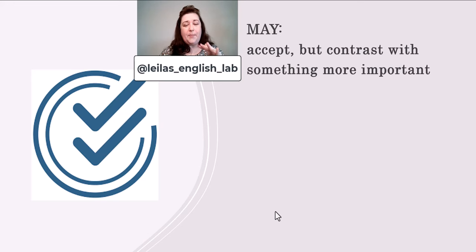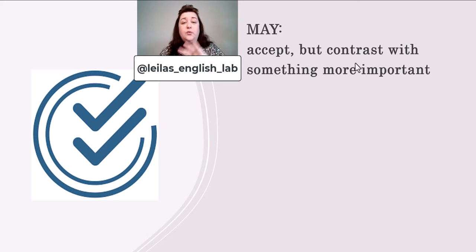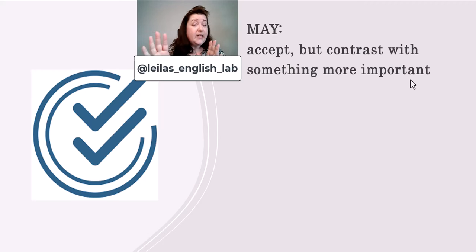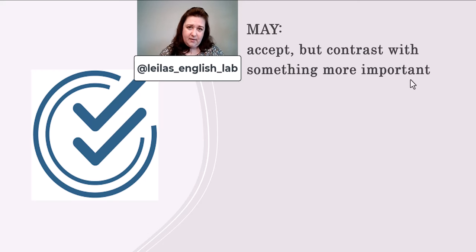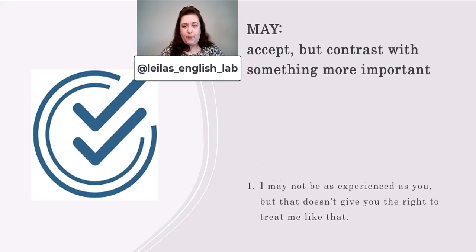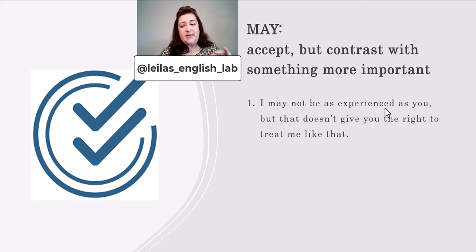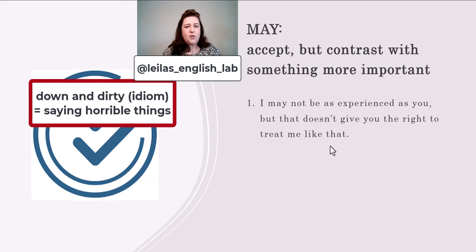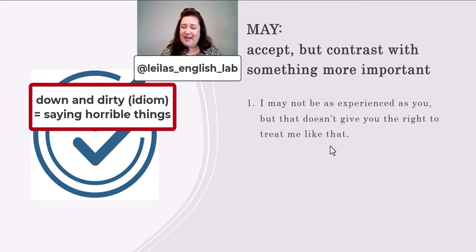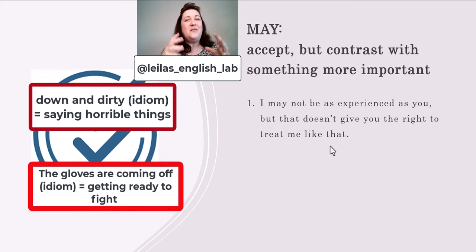Let's move to the next slide. Here, we're using may to accept what somebody has just said but contrast it with something more important. So now may has a completely different meaning — I'm going to accept what you've just said, but add something I think is more important. Let's take a look at an example. I may not be as experienced as you, but that doesn't give you the right to treat me like that.